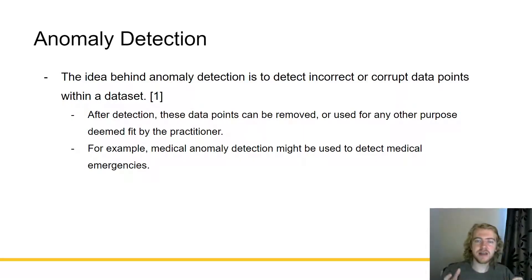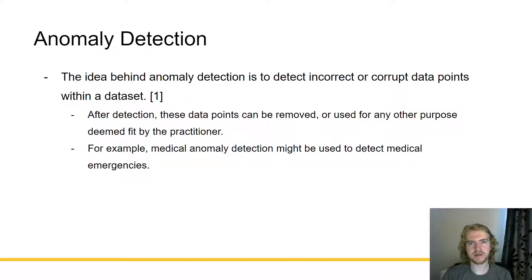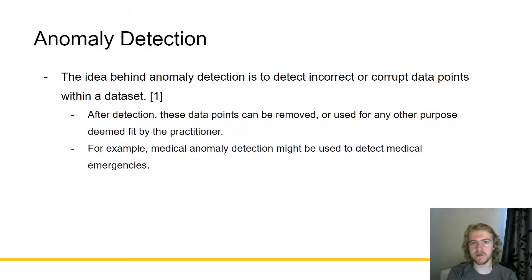So, anomaly detection. The idea behind anomaly detection is to detect incorrect or corrupt data points within a dataset. After detection, these data points can be removed or they can be used for any other purpose deemed fit by the practitioner. For example, medical anomaly detection might be used to detect medical emergencies. Typically someone's medical characteristics are supposed to be as expected, but sometimes they can be off in unexpected or even dangerous ways. Using anomaly detection rather than trying to detect particular problems can be a good way of detecting medical emergencies of all kinds. There are many uses for anomaly detection and it's not just for cleaning up datasets but can be used for various different tasks.